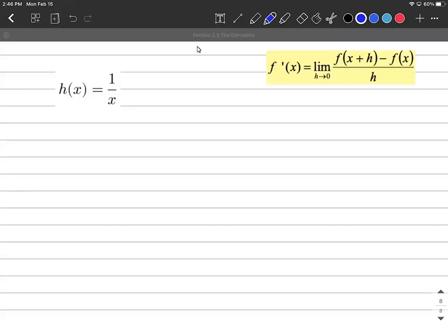In this video, we'll be calculating the derivative of a rational function using the limit definition of derivative. So to calculate h prime of x, what we're going to do is take the limit as h approaches 0.